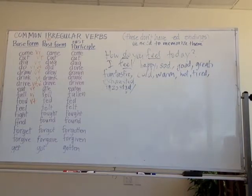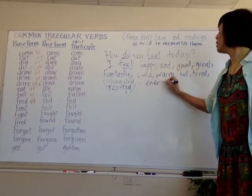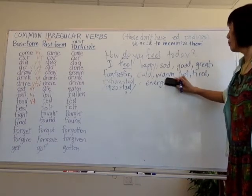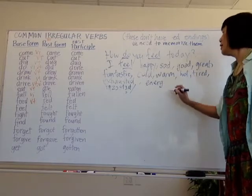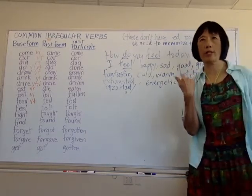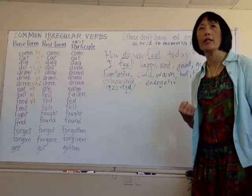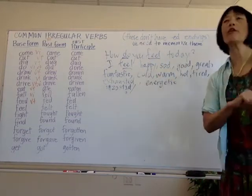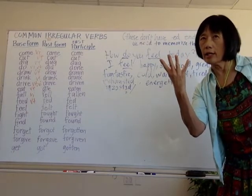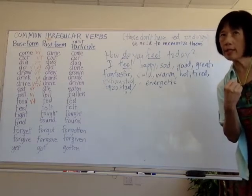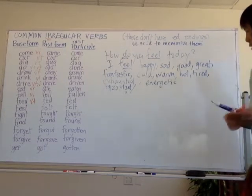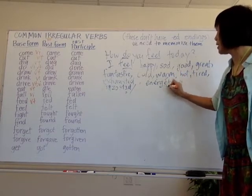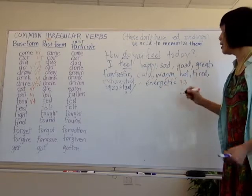If you want to describe having energy, 'energy' is a noun, so we need to change it to an adjective: 'energetic.' How many syllables? Energetic — four syllables. Where is the stress? E-ner-GE-tic — the stress is on the third syllable. So: four syllables, stress on syllable three. You feel energetic.